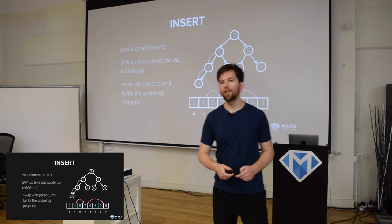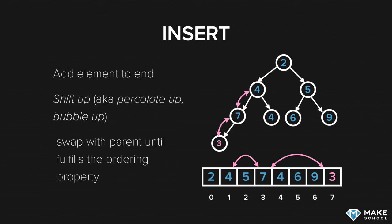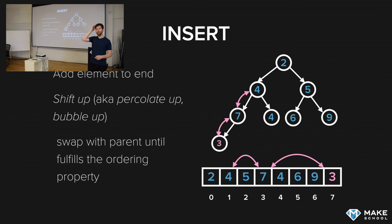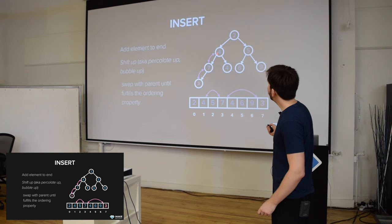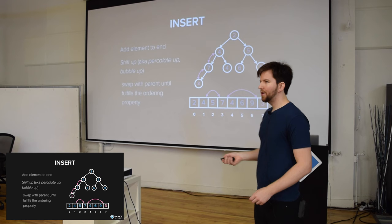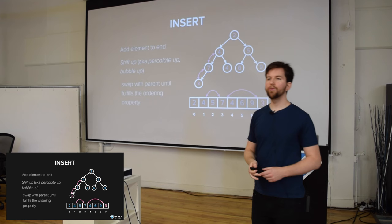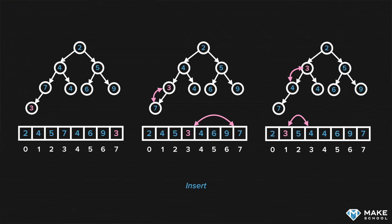How do you insert an item into a heap? The algorithm is fairly simple — you just add the element to the very end of the array. In Python you could use append to add it to the end. Once you've added that element to the end, you run the shift up algorithm — also sometimes called percolate up or bubble up — in which you swap that element with its parent continuously until you reach the condition where it satisfies the heap property. If we want to insert three to this heap, we stick it at the end and then we run the bubble up algorithm.